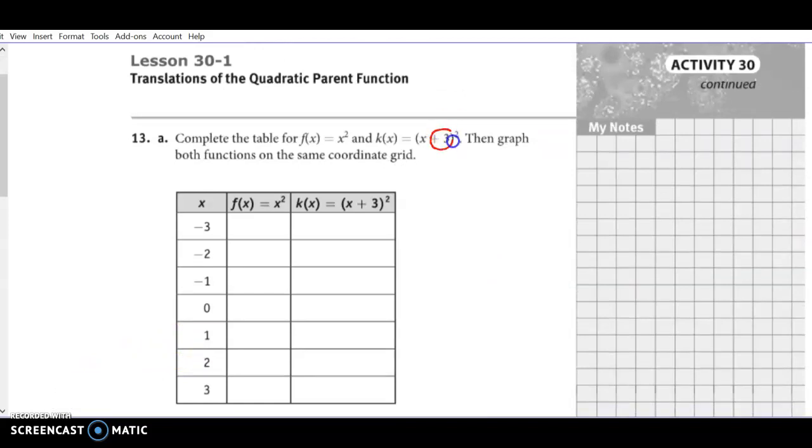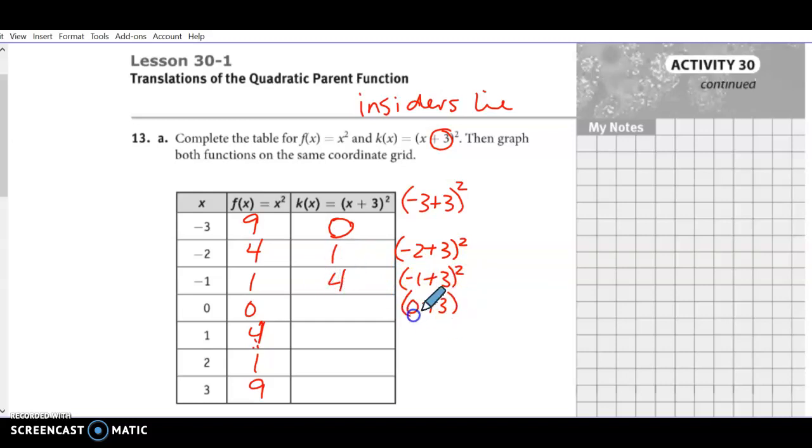In like manner, this one is going to be our h. This one, remember, insiders lie. So now, when we look at our table, we have our parent function, so that's not going to change. But now, this is. So if we had negative 3 plus 3 quantity squared, where negative 3 plus 3 is 0, and 0 squared is 0. If I put in negative 2 plus 3, that's 1. 1 squared is 1. Negative 1 plus 3 is 2, and 2 squared is 4. 0 plus 3 is 3, and 3 squared is 9. And then 1 plus 3 is 4. So 16, 5 is going to be 25, and then 6 would be 36. We're not having the buddy points because we're on the other side. And the reason is because insiders lie.